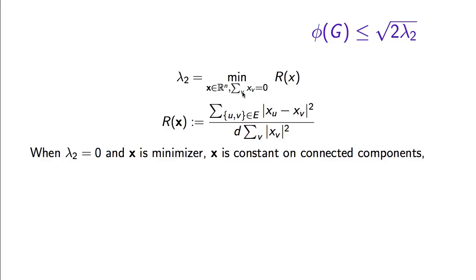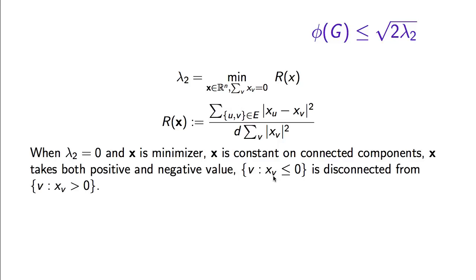This means the vector x must be constant within each connected component. On the other hand, the summation of the entries of the vector is 0, which means the vector must have both positive and negative entries. So if you look at the set of vertices whose corresponding entry is smaller than or equal to 0, and the complement — vertices whose entry is positive — those two sets cannot have any edge going between them. They must be disconnected from each other, showing the graph must be disconnected.